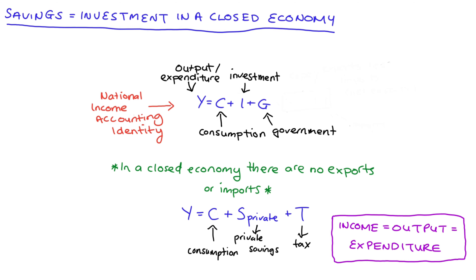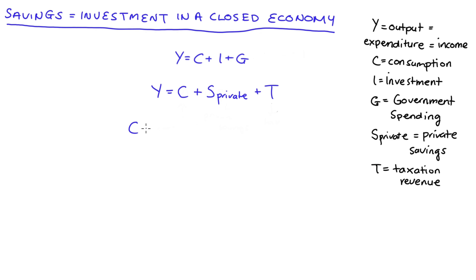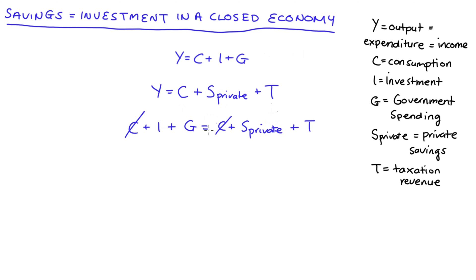So here we have two expressions for Y, and what we're going to do next is just set them equal to one another. From our national income accounting identity we have C plus I plus G, and from the perspective of what we do with our income we have C plus S plus T. Consumption cancels out on either side, and we're just left with I plus G equals S plus T. Taking away government spending from both sides, we get I (investment) equals private savings plus tax revenue minus government spending.